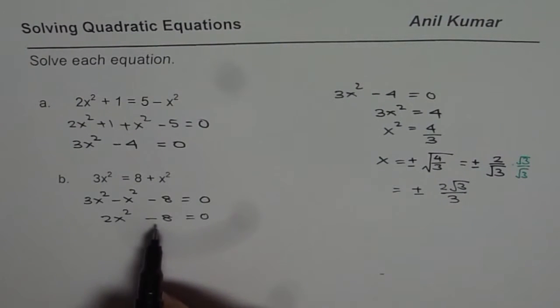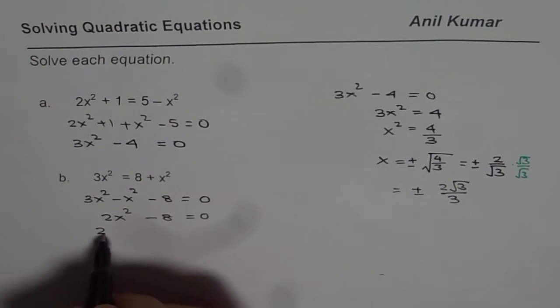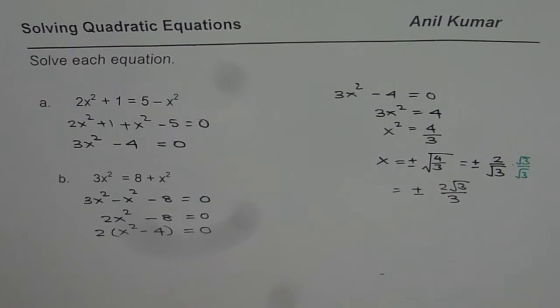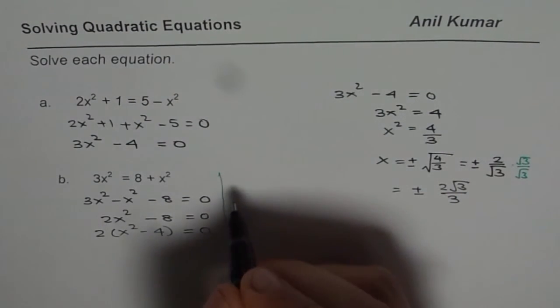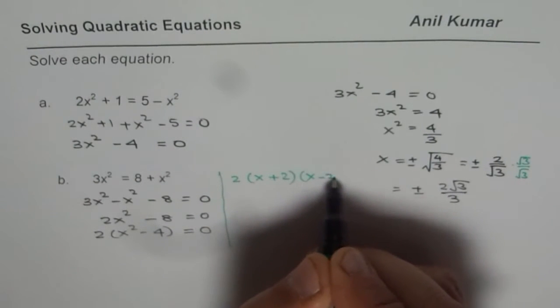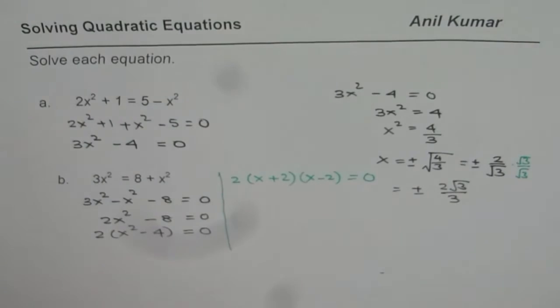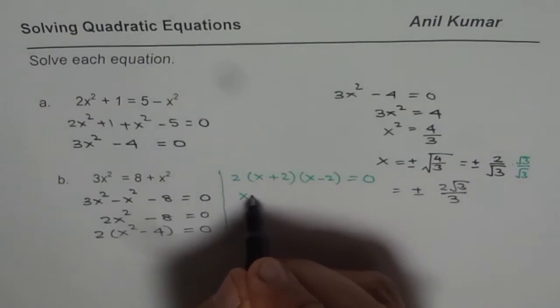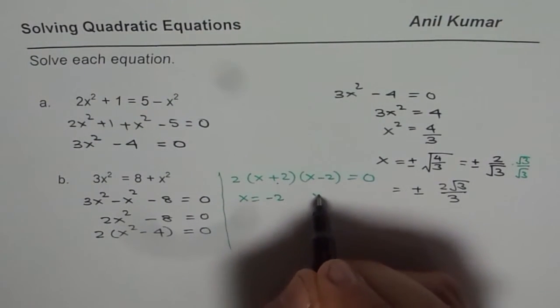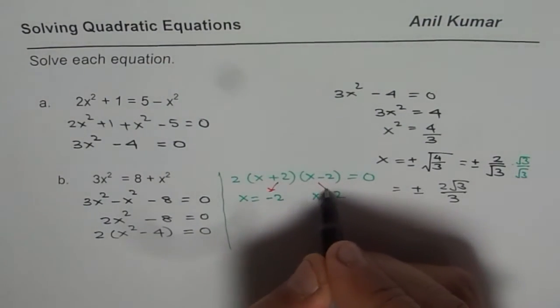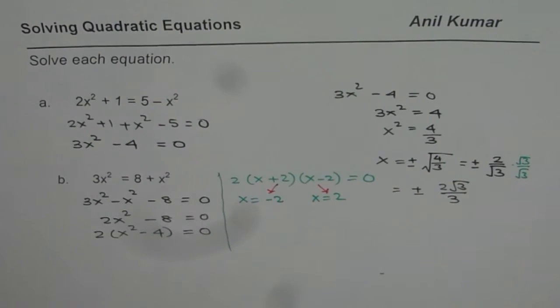At this stage, you can factor and solve. So, if I factor 2, I get 2 times x square minus 4 equals to 0. And this can also be factored. So, let me write this as 2 times x plus 2 times x minus 2 equals to 0. Now, we can equate each factor to 0 to write the solution. So, we have x equals to minus 2 which we get from here and x equals to plus 2 which we get from the other factor. So, those are the two solutions which you will get.